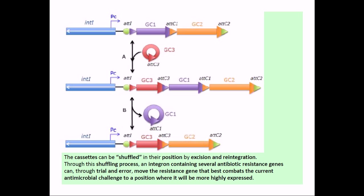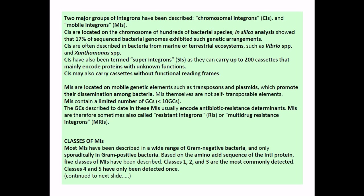They can stay for a longer period of time and combat the current antimicrobial challenge by highly expressing the antimicrobial resistance gene. That is the importance of having integrons and having many gene cassettes inside the integron. There are two major types of integrons: chromosomal integrons (CIs) and mobile integrons (MIs).